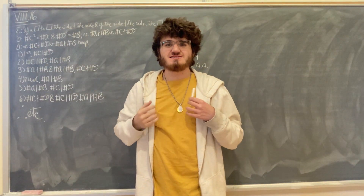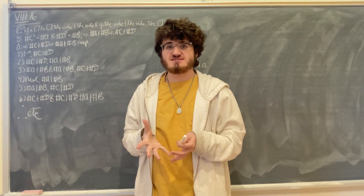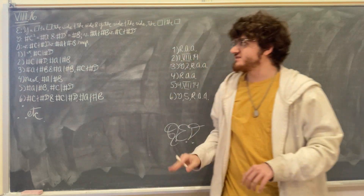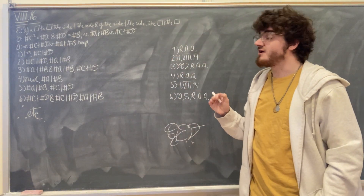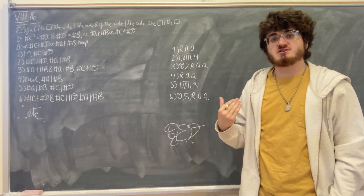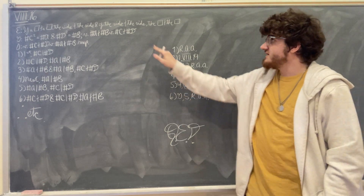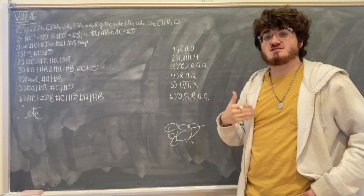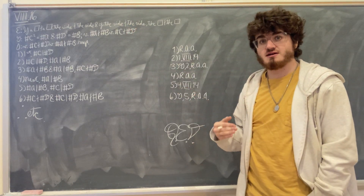Hello. This will be a demonstration of Proposition 16 from Book 8 of Euclid's Elements, which says that if a square number does not measure a square number, then neither will its side measure its side. But if, conversely, the side does not measure the side, then neither shall the square number measure the square number.